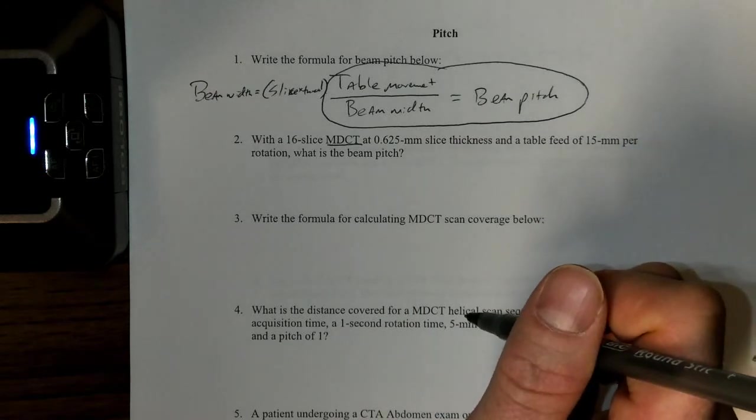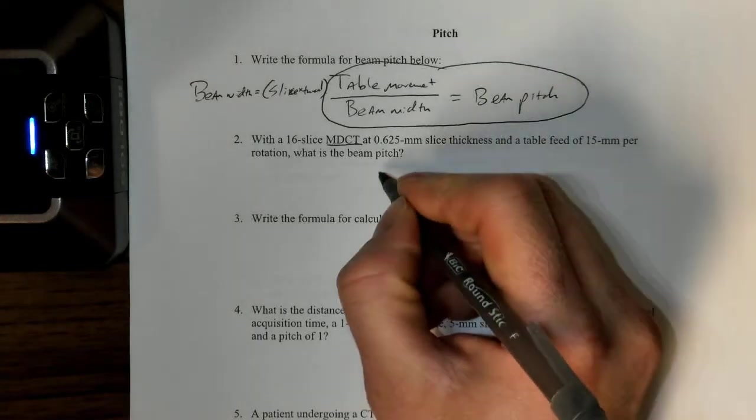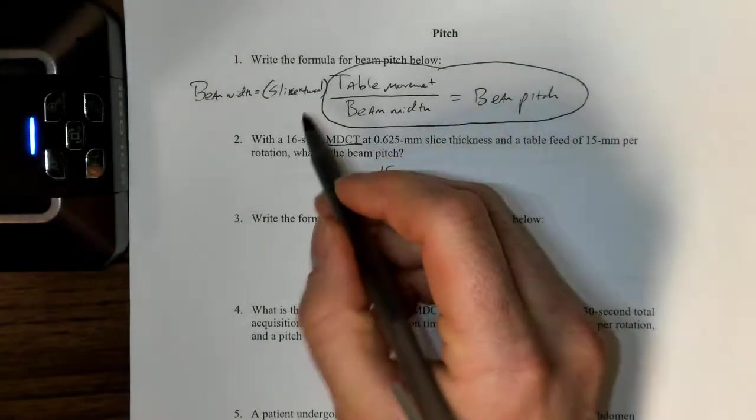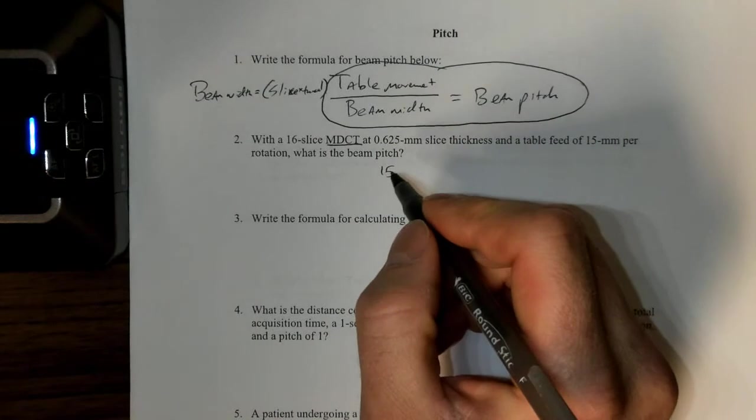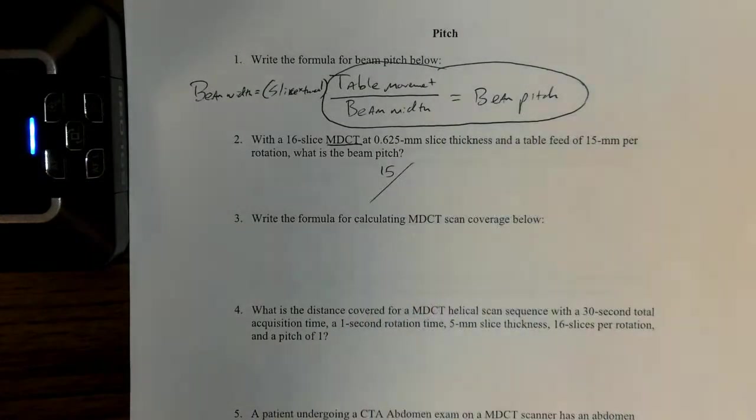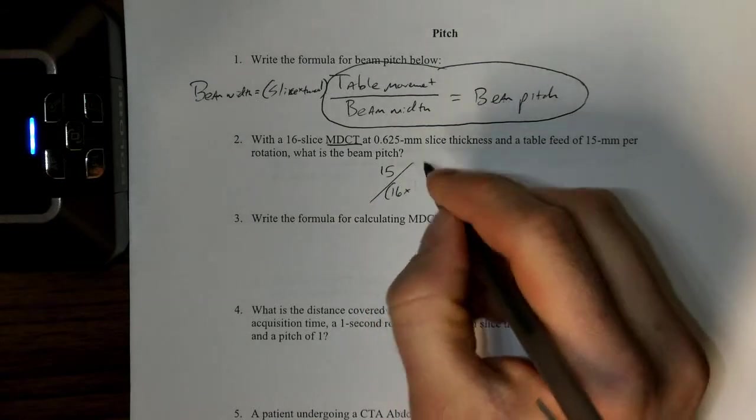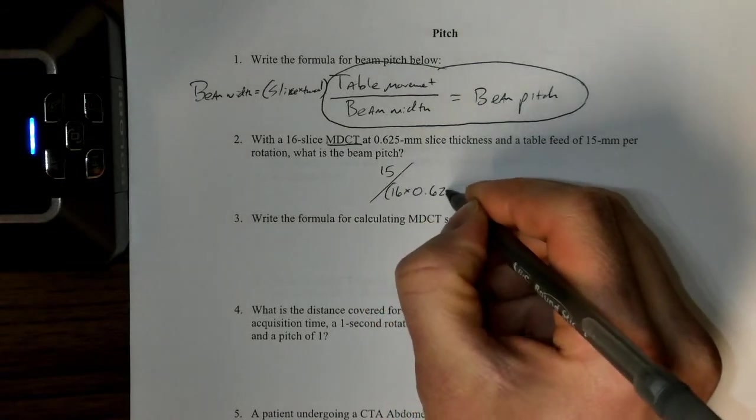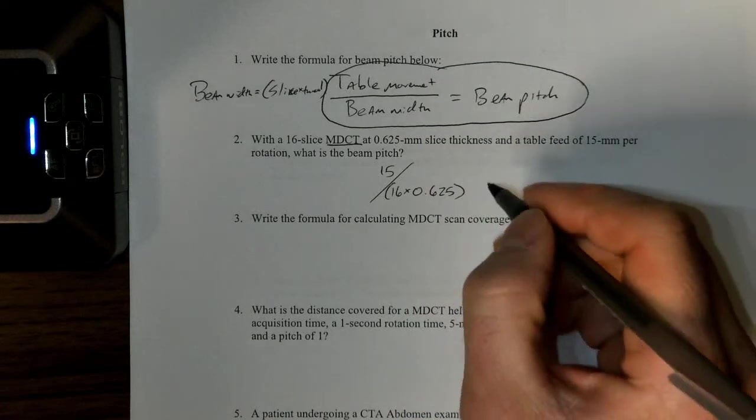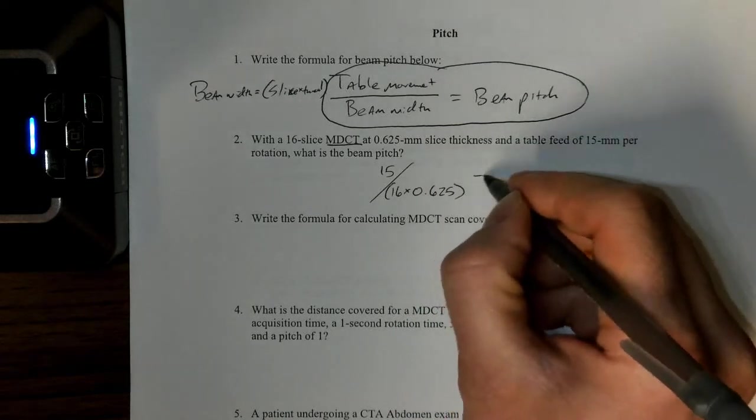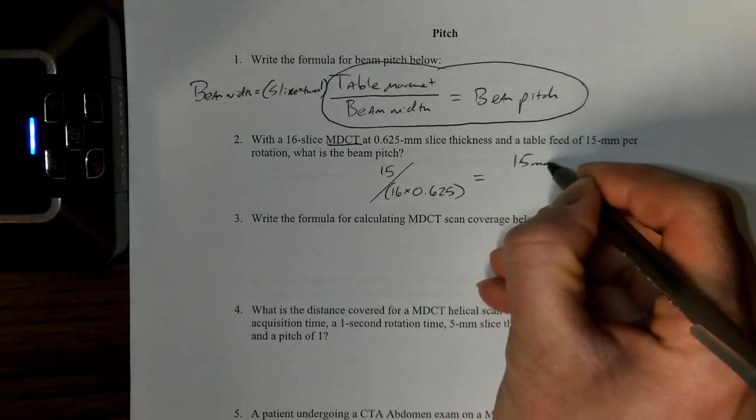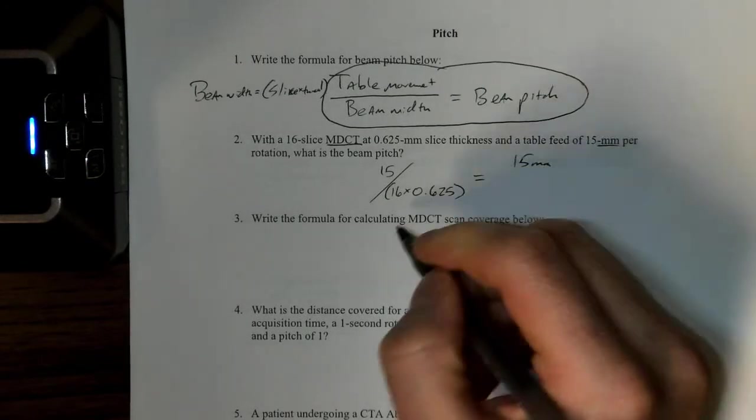We'll set this up. We'll put 15—that's the table movement per rotation—and we're going to divide that by 16, putting it inside the parentheses because we'll want to do this part first, times 0.625, which equals 15 millimeters.